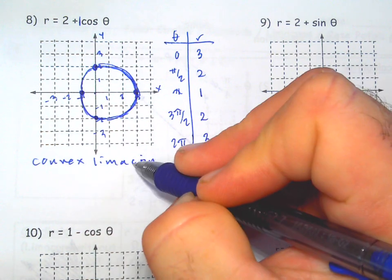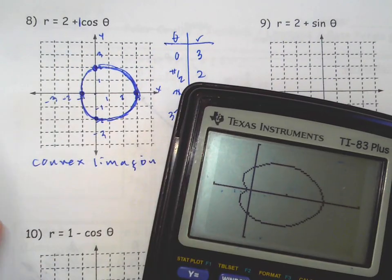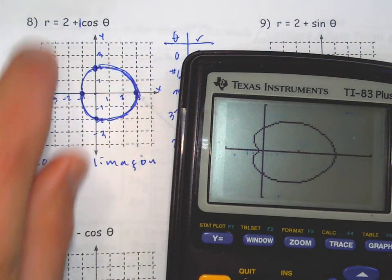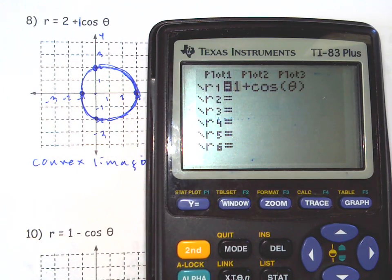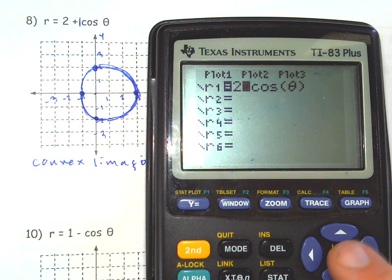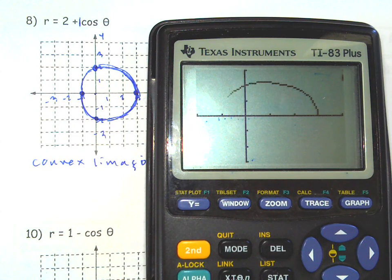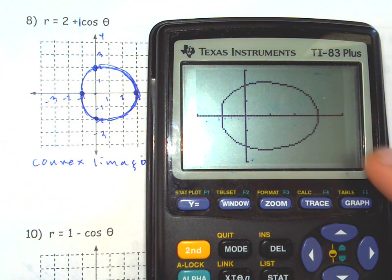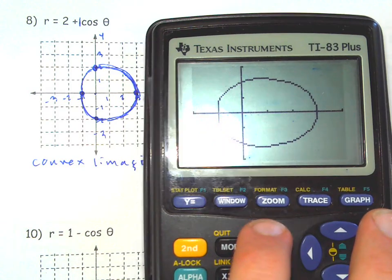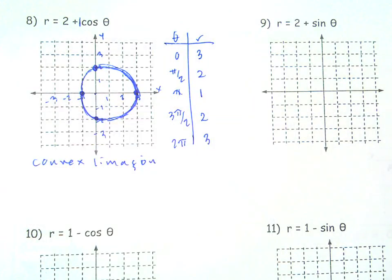And a limaçon is sort of a name for pretty much kind of the whole group of shapes that use this kind of method. So I mean, we could try it real quick. Let's see. 2 plus cosine theta. Probably go back to window real quick. X min, maybe negative 2 to 4. Maybe negative 3 to 3. And there you go. It kind of looks like a circle smashed. I mean, this should, I think, yeah. So, anyways, convex limaçon.